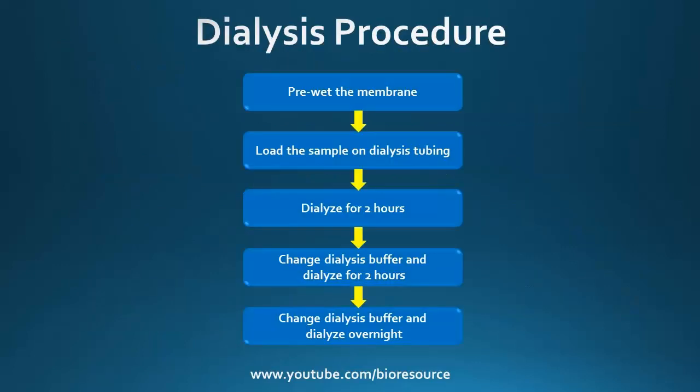Let's see the general procedure of dialysis. First, the membrane needs to be wetted, and the sample can be loaded into the dialysis tubing or dialysis bag. Dialysis is done initially for 2 hours, after which the dialysate needs to be changed, and this can be continued for another 2 hours. With each buffer change, a greater number of contaminants get removed. For example, for 1–2 ml of sample, 200 ml of buffer is required, which removes contaminants by 200-fold once equilibrium is attained. So every buffer change reduces the contaminant load by 200-fold.